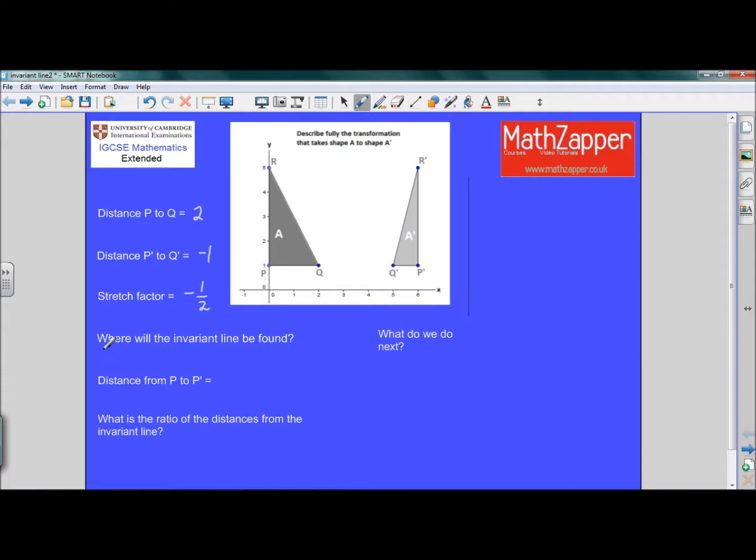So let's just make a note somewhere between P and P dash. That's okay at this stage. Now what's the distance from P to P dash? So P all the way over to P dash is a distance of 6 units.